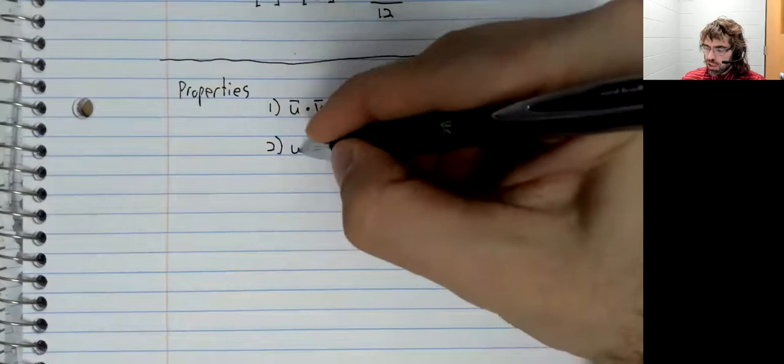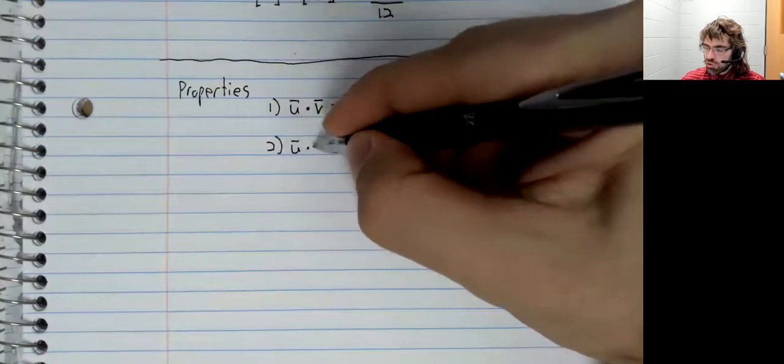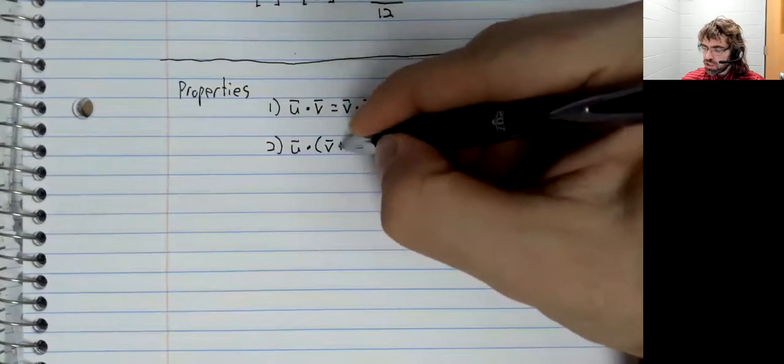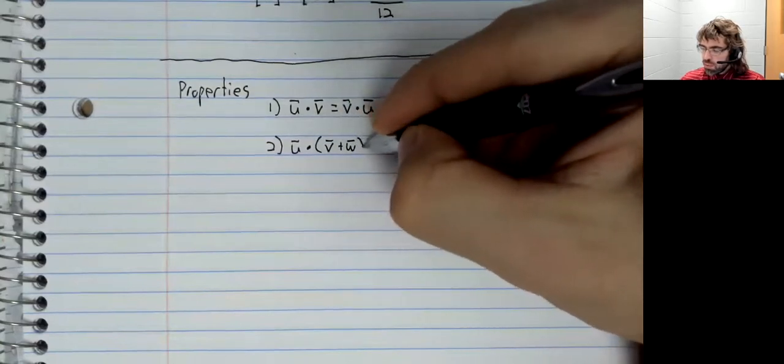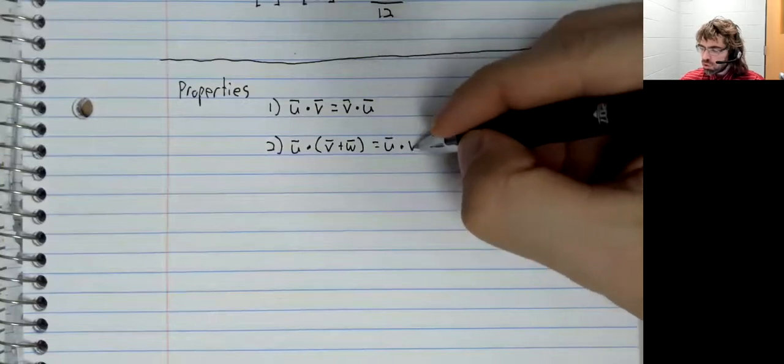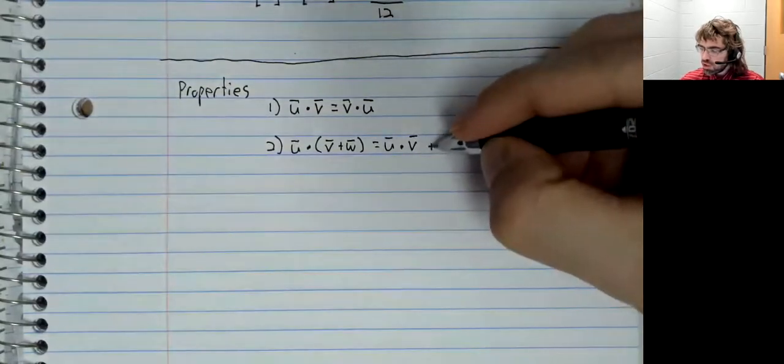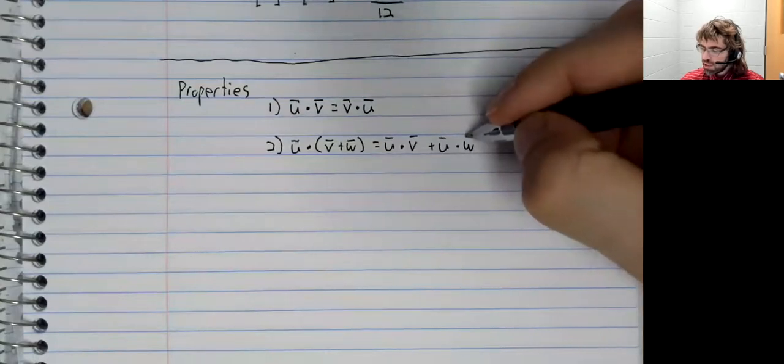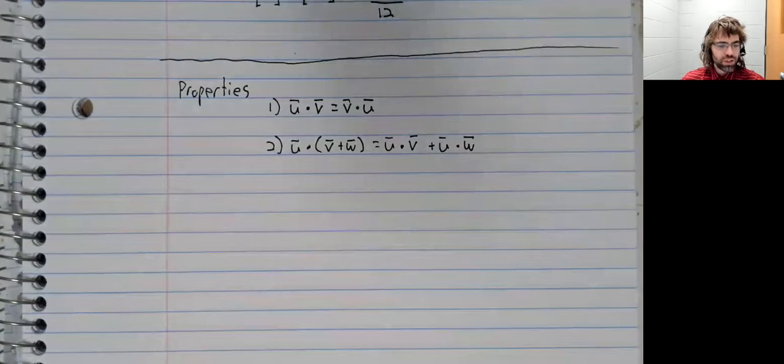The dot product distributes over addition in the way that we are used to multiplication distributing over addition.